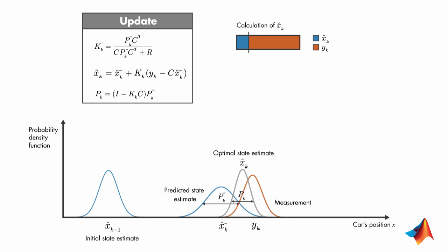In the opposite case, where the error in the a priori estimate is small, the a priori estimate is trusted more, and the computation of x hat k mostly comes from this estimate.